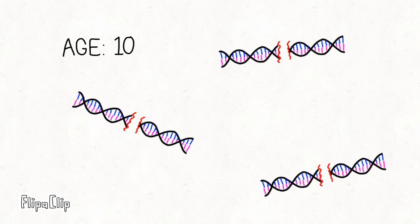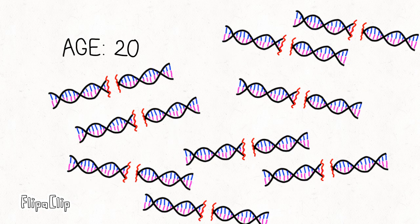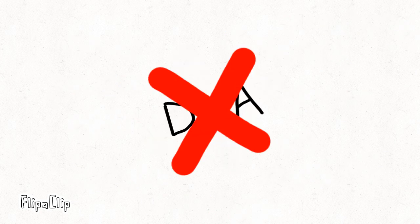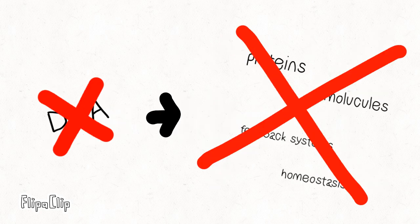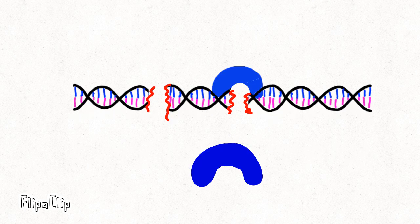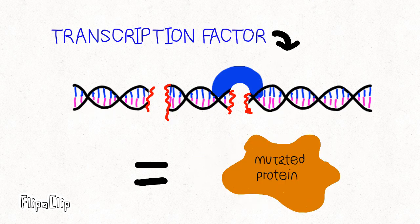As Werner syndrome patients get older, their DNA eventually accumulates so many errors that it essentially becomes non-functional. If the DNA continues to stay damaged, the cells in your body would not be able to correctly produce the proteins essential for homeostasis.